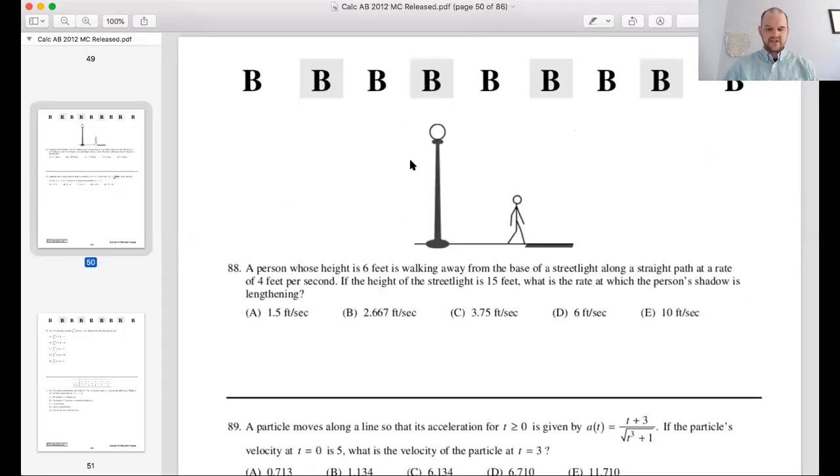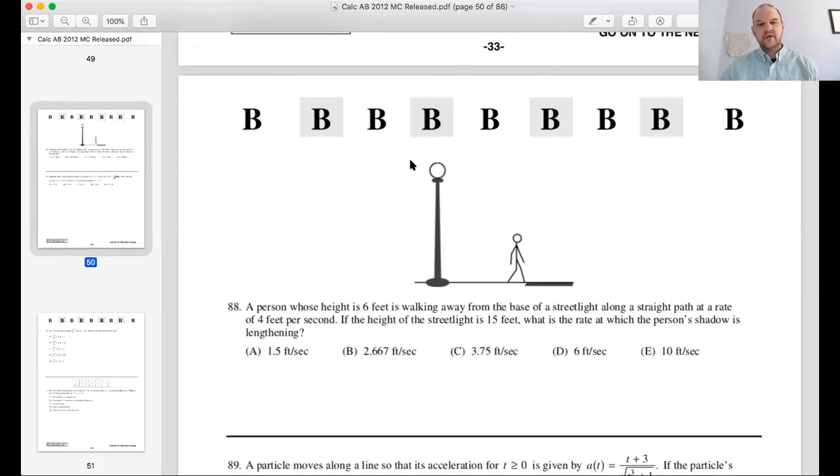And then let me show you something. Everybody came back from the exam. They're like, oh, turns out the shadow problem was on it. Look at this. It's like an XKCD type picture too. Person whose height is six feet is walking away from the base. You can find this exam on, I don't know, it was on AP Central. This exam is publicly available though. So you can definitely find it. It's 2012 multiple choice.